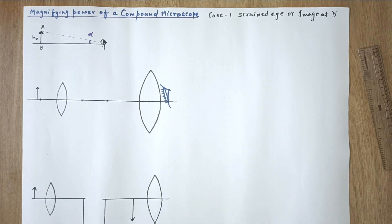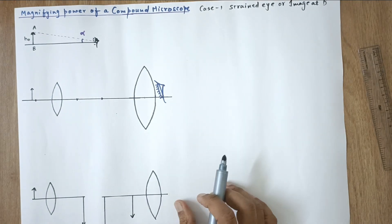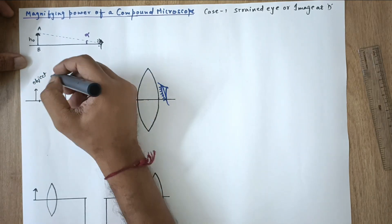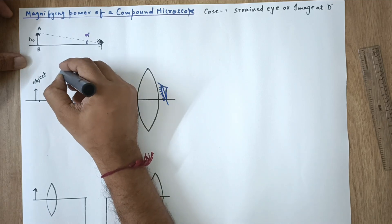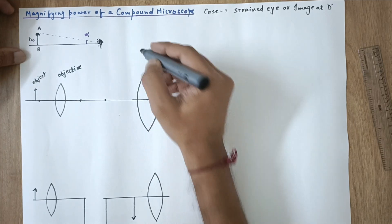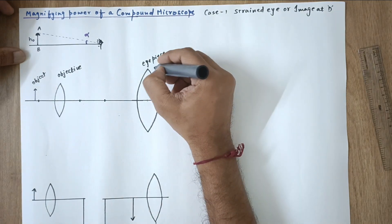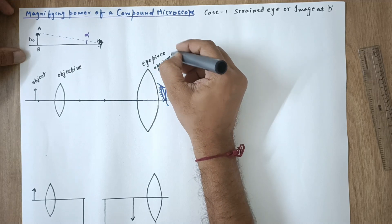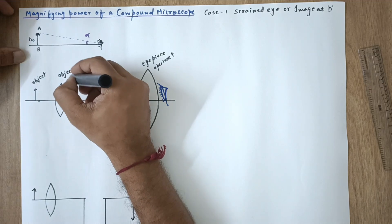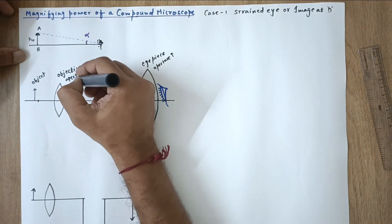We have a compound microscope which consists of two lenses. Here is our tiny object which we wish to see in an enlarged way. Since this object is near to the first lens, it is known as the objective. We see through the other end, so our eye is very close to the second lens, which is known as the eyepiece. Both are convex lenses. The aperture of the eyepiece is very large compared to the objective.